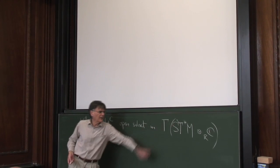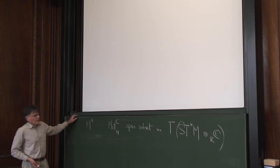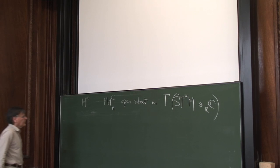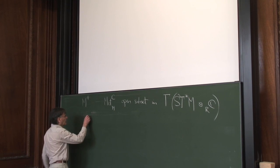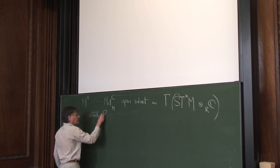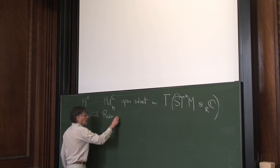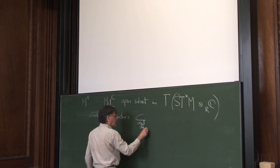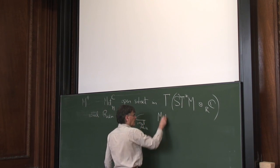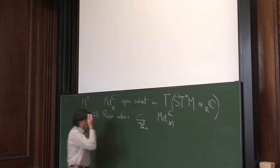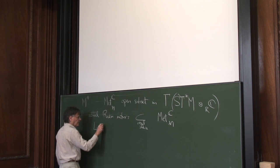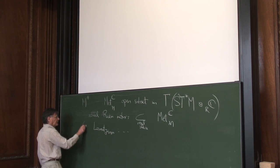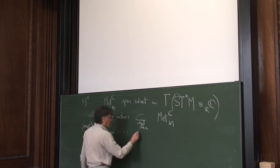A section of this would be a complexified metric, and we pick out a different subset of that. The general Riemannian metrics — ordinary Riemannian metrics — are a real slice, and the Lorentzian metrics sit on the boundary.